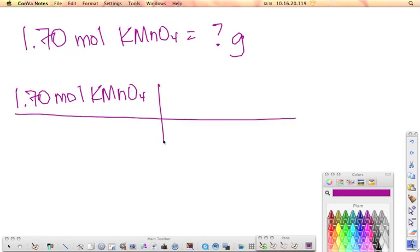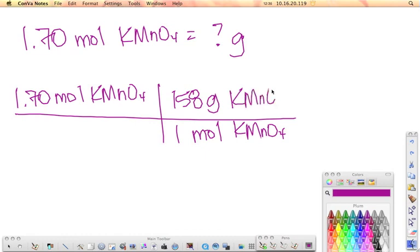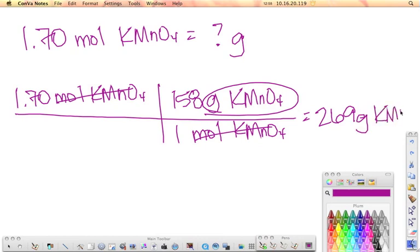And I'm going to convert this to mass using the molar mass, except this time, since I'm starting with moles, I want to make sure that moles is down here in this box. So I'm going to put for every mole of potassium permanganate, I have a mass of 158 grams. Work this out. My moles of potassium permanganate cancel out. I'm left with grams of potassium permanganate, and you can see here I just have to multiply these two numbers, and I end up with 269 grams of potassium permanganate.